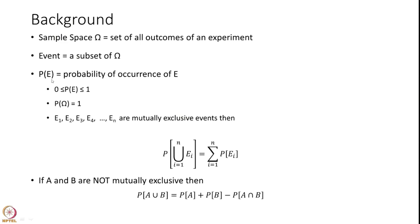This probability is defined with three qualities. One is that it is between 0 and 1. The probability of the whole sample space is 1. And if you have mutually exclusive N events, then the probability of the union of all those events is the summation of all these probabilities.